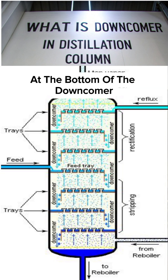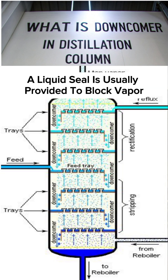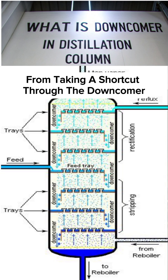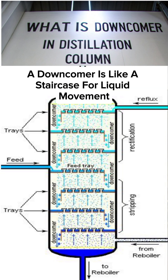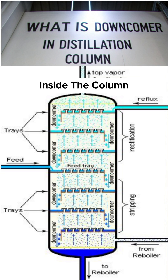At the bottom of the downcomer, a liquid seal is usually provided to block vapor from taking a shortcut through the downcomer. In simple words, a downcomer is like a staircase for liquid movement inside the column.